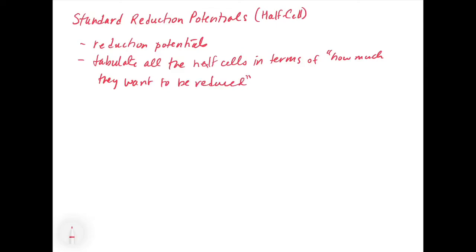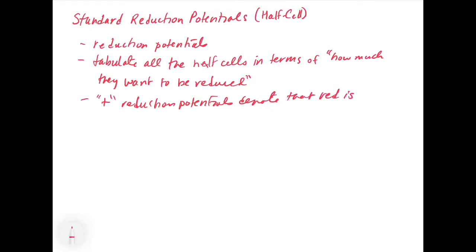So potentials that are very positive—standard reduction potentials that are positive—denote that reduction is favorable. We have to have an arbitrary zero, and the arbitrary zero point is the standard hydrogen electrode.